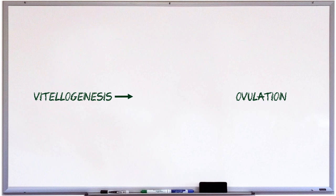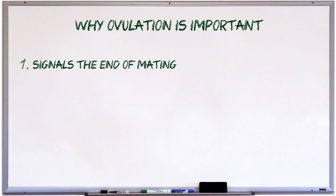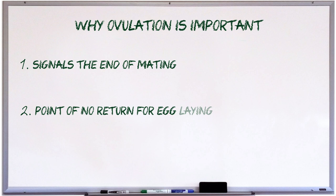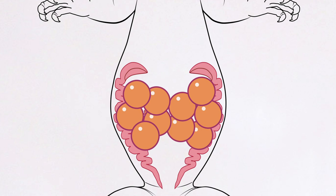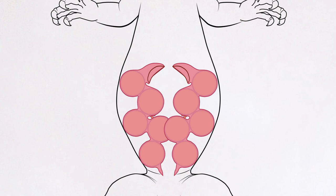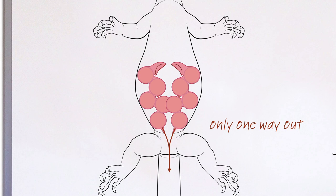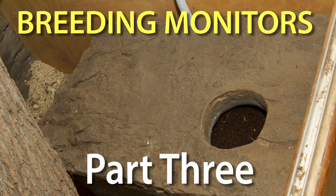Secondly, ovulation is the point of no return for egg laying. Once the female has ovulated, she is committed to laying eggs. Prior to ovulating, if conditions aren't quite right for nesting, it is possible for a female to resorb the eggs. Once she has ovulated, she is no longer able to resorb them and must lay them or she'll get into trouble. So if you haven't set up your nesting conditions properly, the female can retain the eggs and become egg-bound.